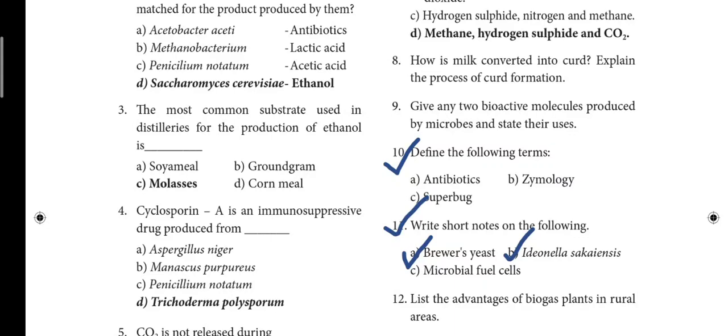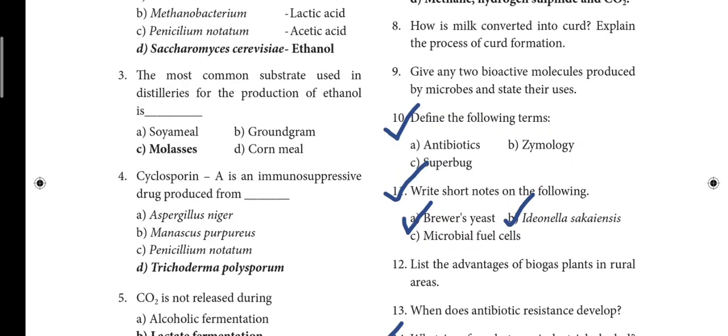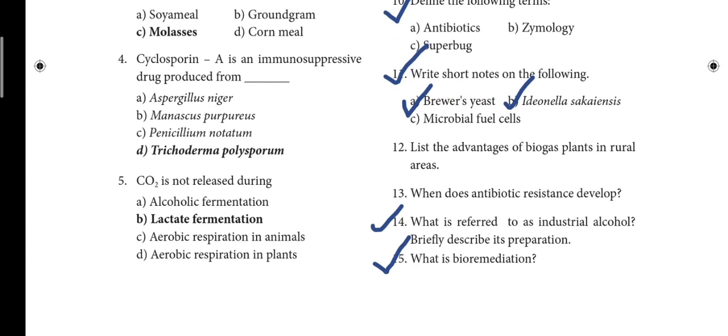Lesson 8 book-back important questions: 10th question — define the following terms: antibiotic, zymology, superbug. 12th question — previous year question on acanthamoeba. 14th question — what is referred to as industrial alcohol? Briefly describe its preparation. 15th question — what is bioremediation? These are the important questions from the book-back.